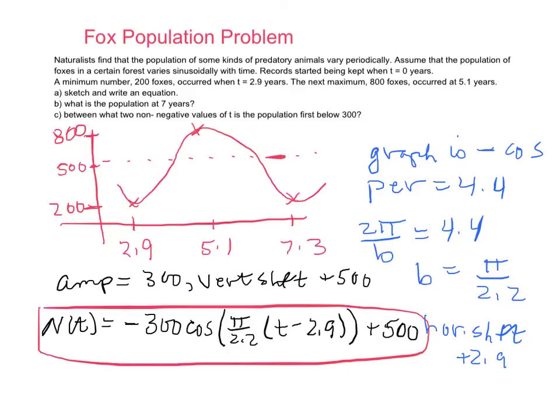Okay, let's answer the next questions. Next two questions, we use our calculator. And we get n of 7 should be around, check it out, 227 foxes.